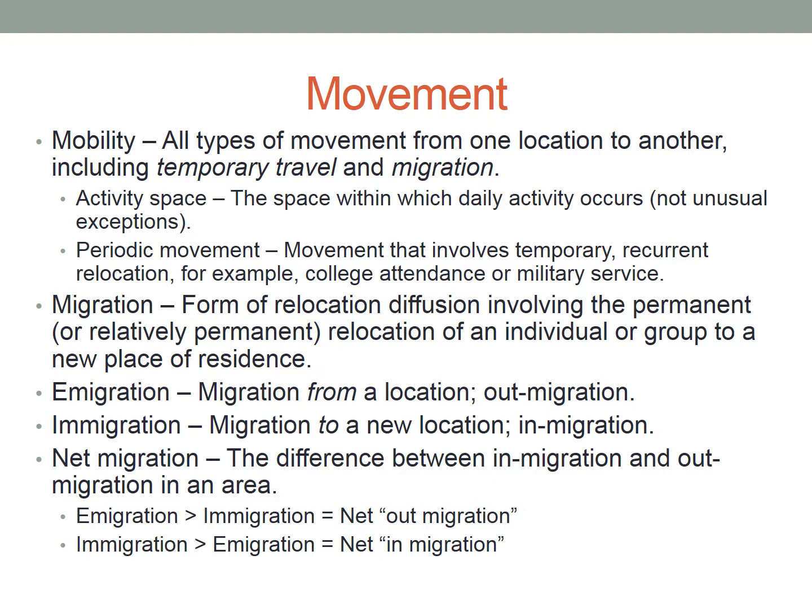As part of mobility, we include a couple of terms like activity space, which is the space within which daily activity occurs, not including those unusual exceptions. Think about your activity space — it probably includes your high school, your home, and maybe if you play a sport or are in a club, band, or orchestra. Commuting, which is just traveling to work and then back home again, is a type of movement that typically occurs in the activity space.